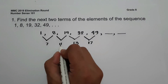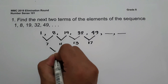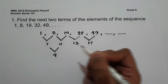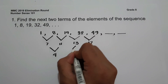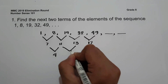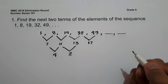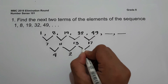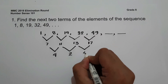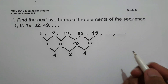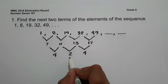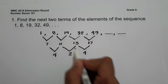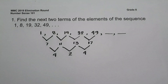Looking at the second differences: 11 minus 7 is 4, 13 minus 11 is 2, and 17 minus 13 is 4. So the second differences follow the pattern 4, 2, 4, 2. Using this pattern, we can find the next two terms.